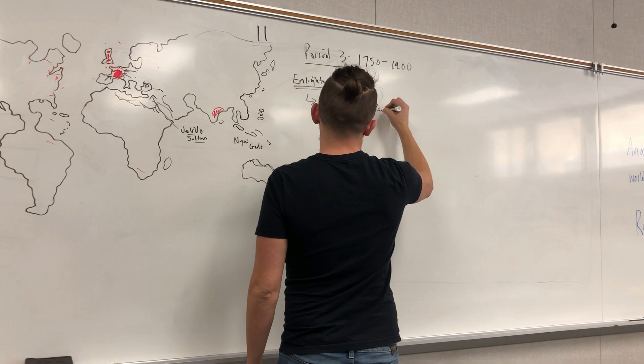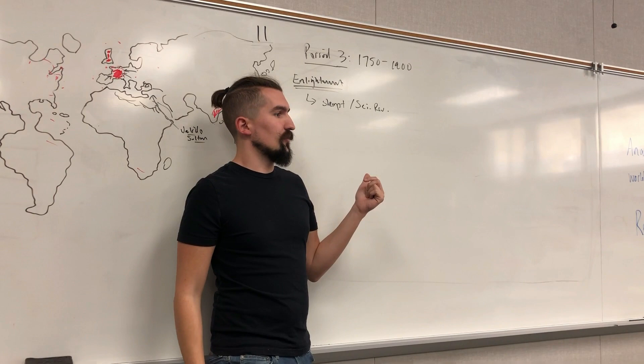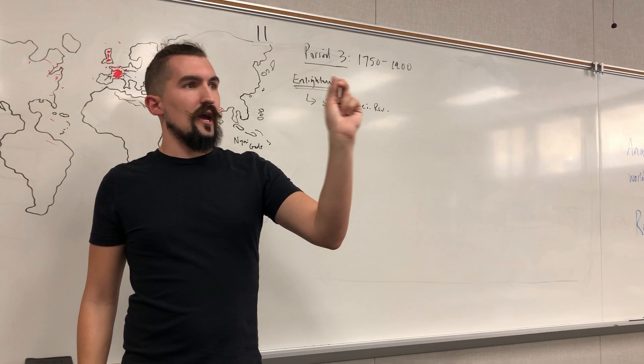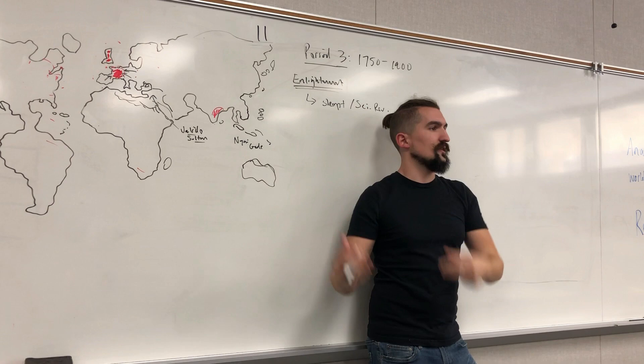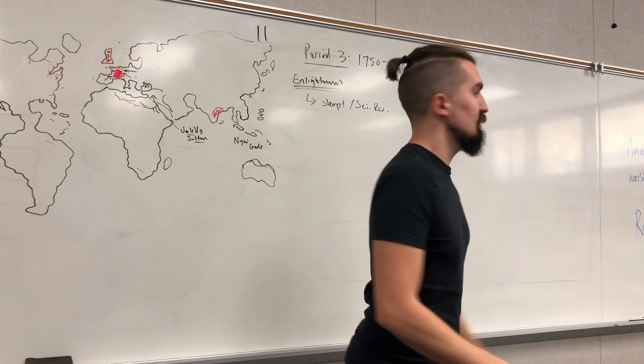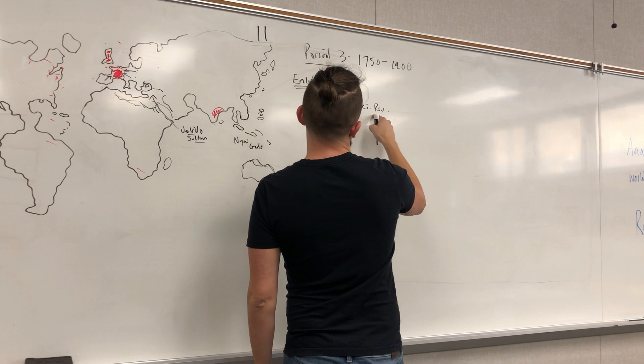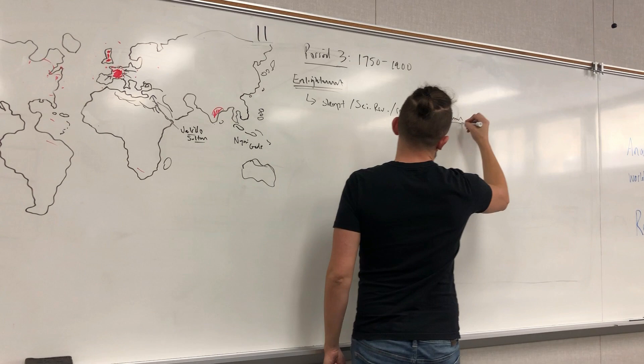The Enlightenment is skepticism and the fundamentals of the scientific revolution applied not just to literature, religion, or the natural world, but abstractly to all human institutions. That includes religion, but it also means governments — questioning the relationship between the individual and the state, who has the authority to run the state, and any social class or hierarchy within it. So the Enlightenment applies scientific revolution fundamentals and reason to human institutions.